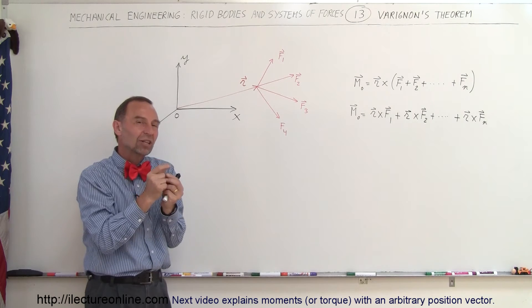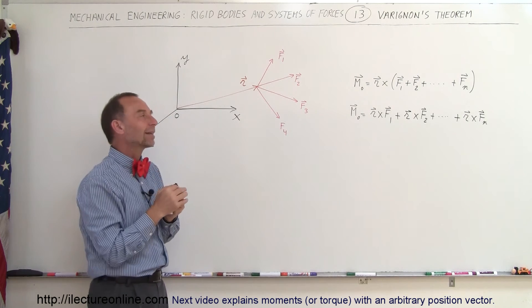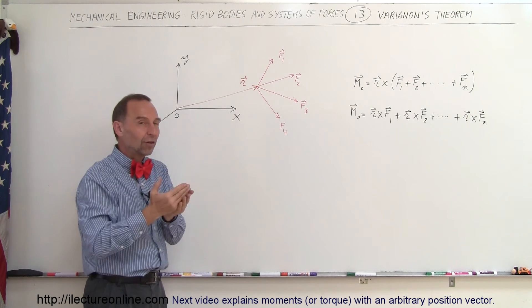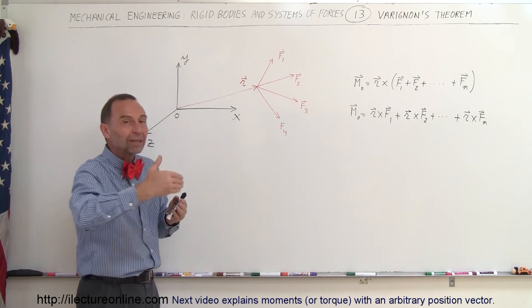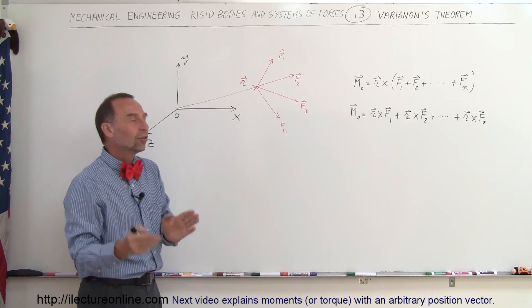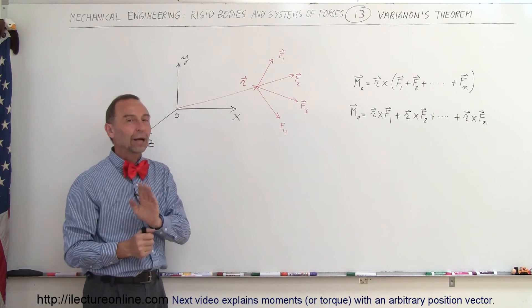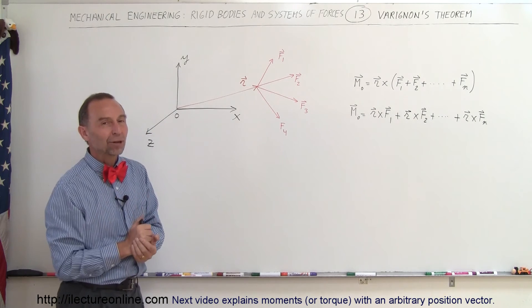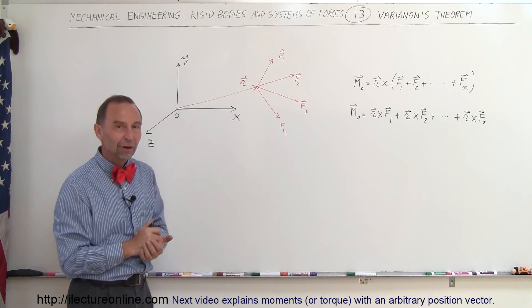Simply by taking the position vector in each case to the force that's acting on it and then doing the cross product or the vector product, then simply adding all those vector products together to get the total moment, and that will help us do many of the problems coming up. And that's known as Varignon's theorem.